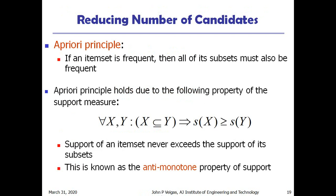In our first approach — reducing the number of candidates — one principle is used called the Apriori principle. Based on prior knowledge we reduce candidate item sets. The Apriori principle states: if an item set is frequent, then all of its subsets must also be frequent. Mathematically, for all X ⊆ Y, support(X) ≥ support(Y). The support of an item set never exceeds the support of its subsets. This property is known as the anti-monotone property.